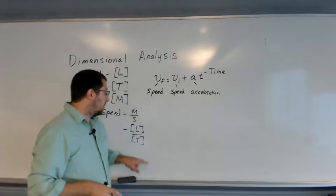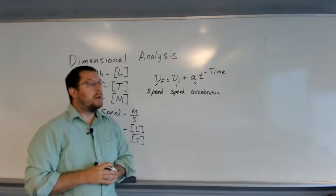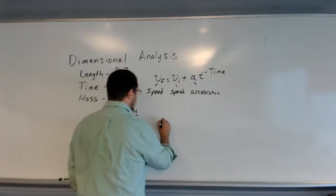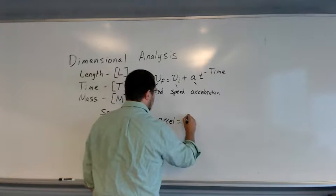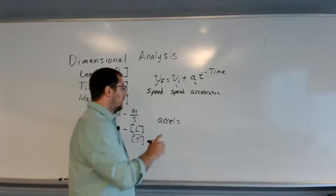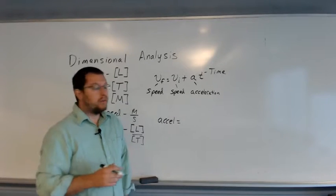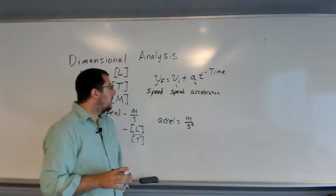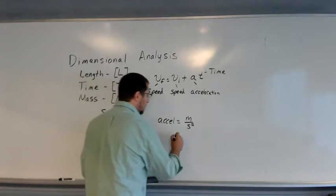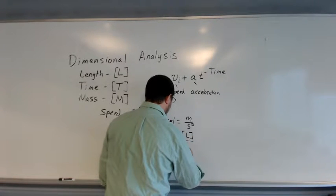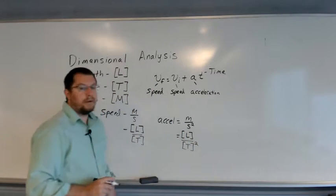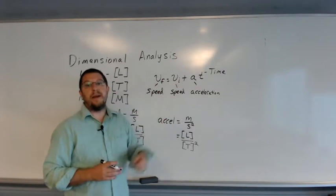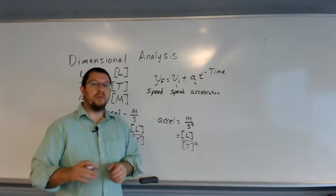I'm going to write down the units generically for each of these terms and then see if both sides match. One thing we need to know is what the units of acceleration are. Acceleration has units in SI of meters per second per second, which is the same thing as meters per second squared. In our generic units, this is going to be length per time squared. As you can see, mass does not come into this equation, so we're not going to be working with mass here.